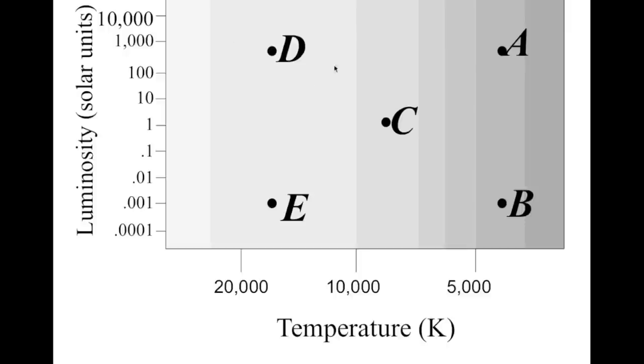We can compare D with C. This is a case where you've got an object that is more luminous and hotter than a cooler object, which is less luminous. The size comparison here would be that D must be larger than C.